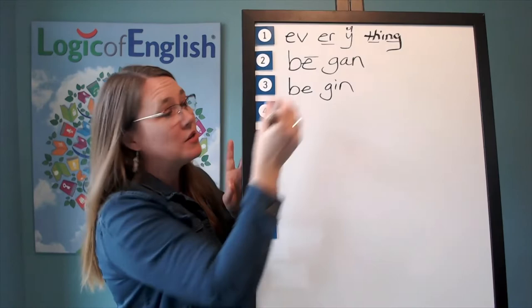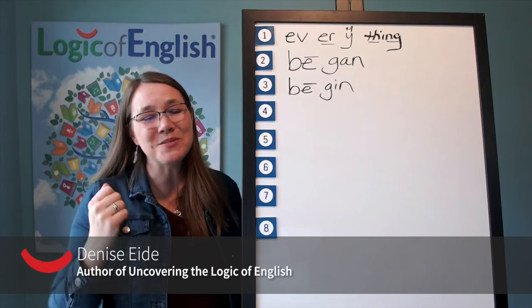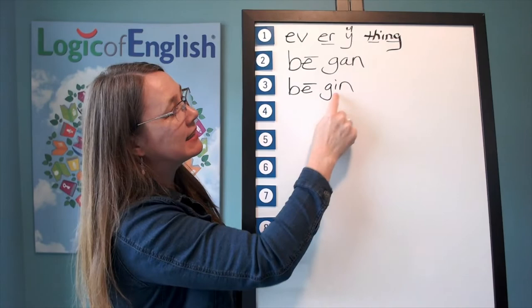And how will we mark it? Put a line over the E. And why did the E say its long sound? A, E, O, U usually say their long sounds at the end of the syllable. Let's read it. B-E-G-I-N. Begin.